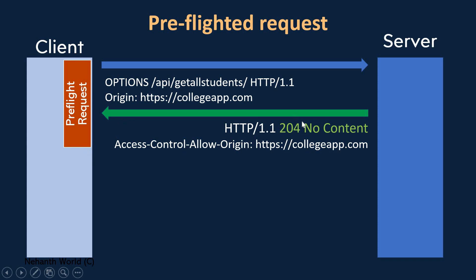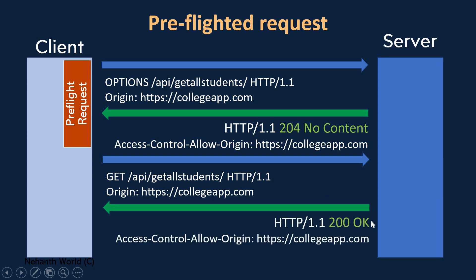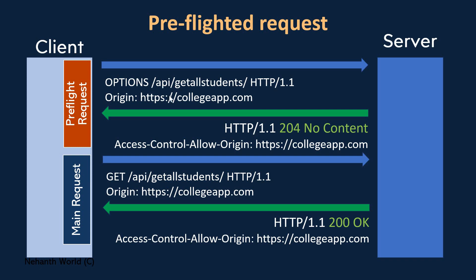When this preflight request gets a success response, the browser will then make the main actual request. You can see it is of type GET. The server sends the response 200, and here also the CORS header is added with the specific origin name. So in the case of a preflighted request, two different requests are made to the server — first the preflight and second the main request.